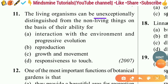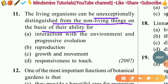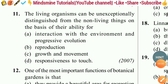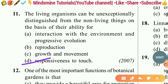Question eleven: Living organisms can be unexceptionally distinguished from non-living things on the basis of their ability for — interaction with the environment and progressive evolution; reproduction, growth and movement; or responsiveness to touch. Since the question asks 'unexceptionally,' the right answer is option D — responsiveness to touch — as living things show responsiveness to changes.